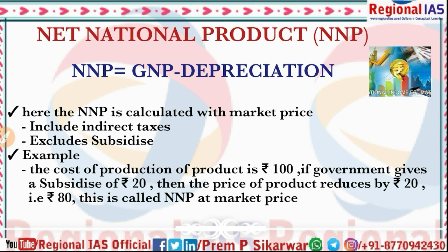There are two prices: market price and factor cost. When we calculate NNP at market price, indirect taxes — like GST — are included in it, but government subsidies are excluded. Let us understand this with an example.